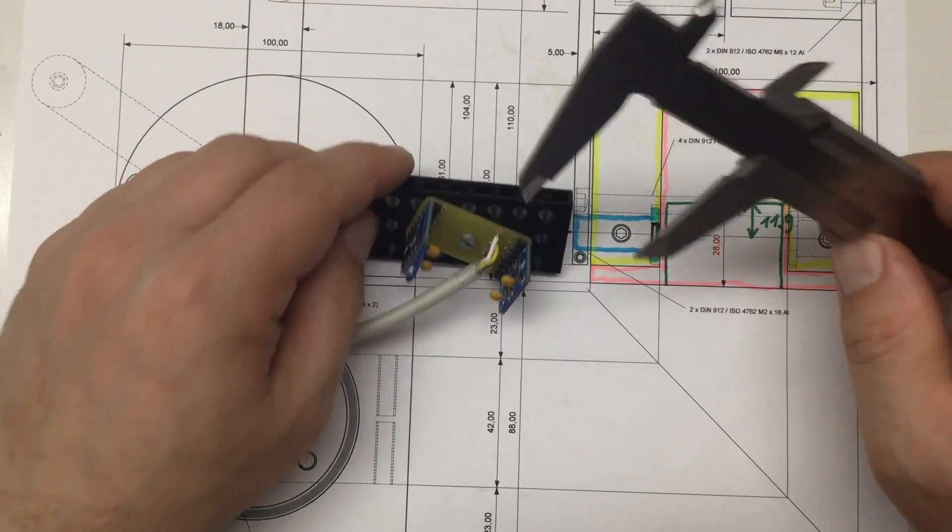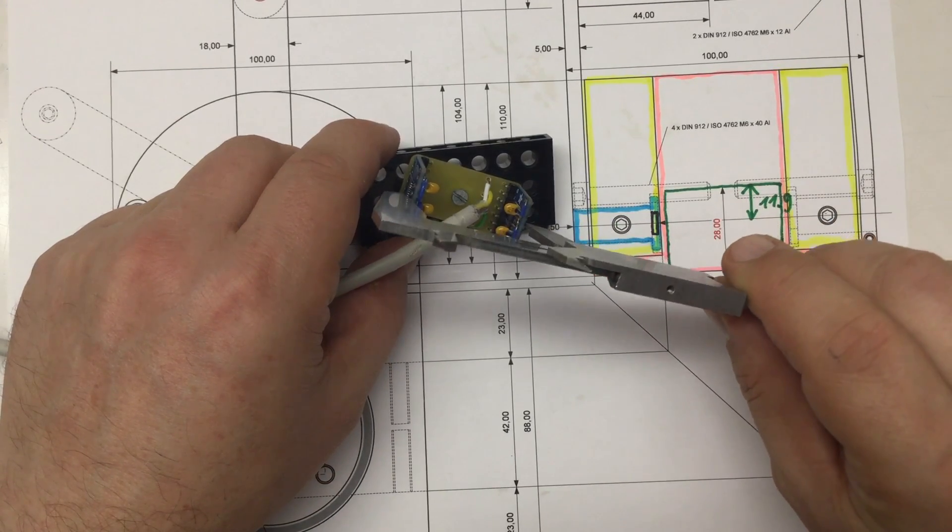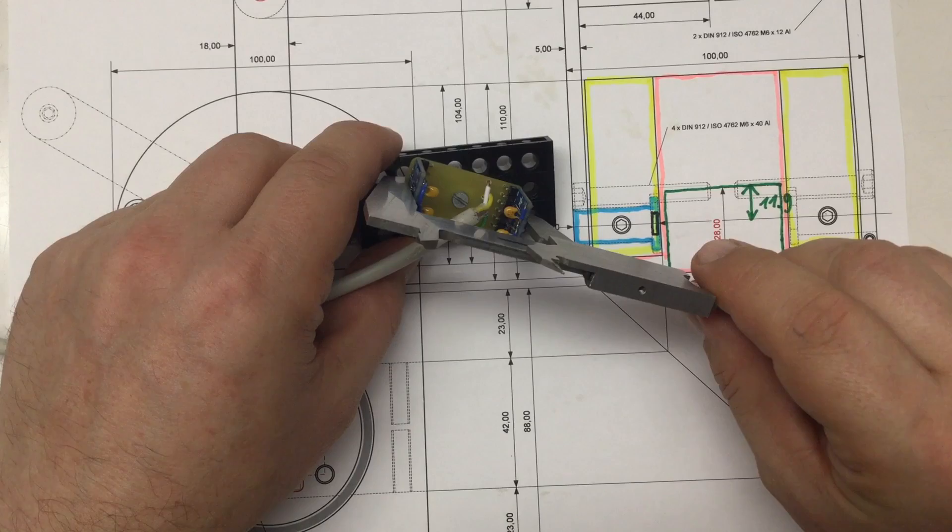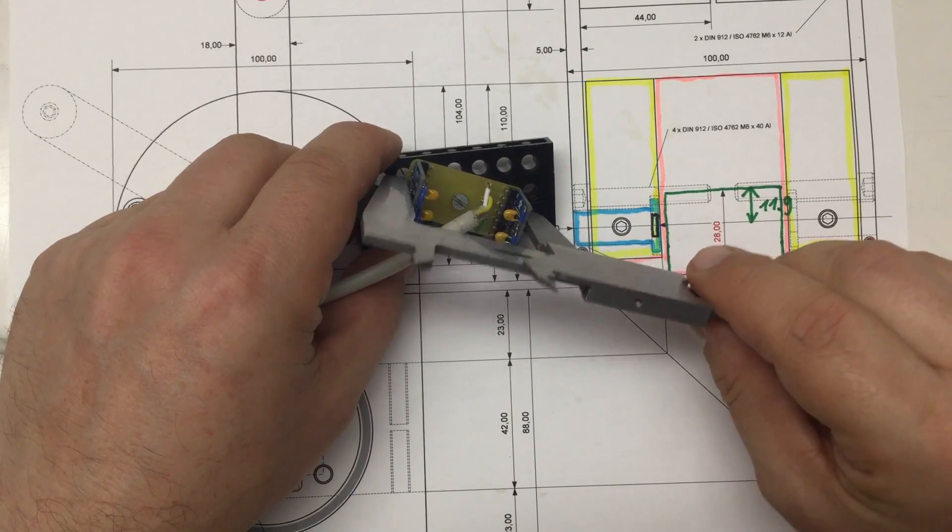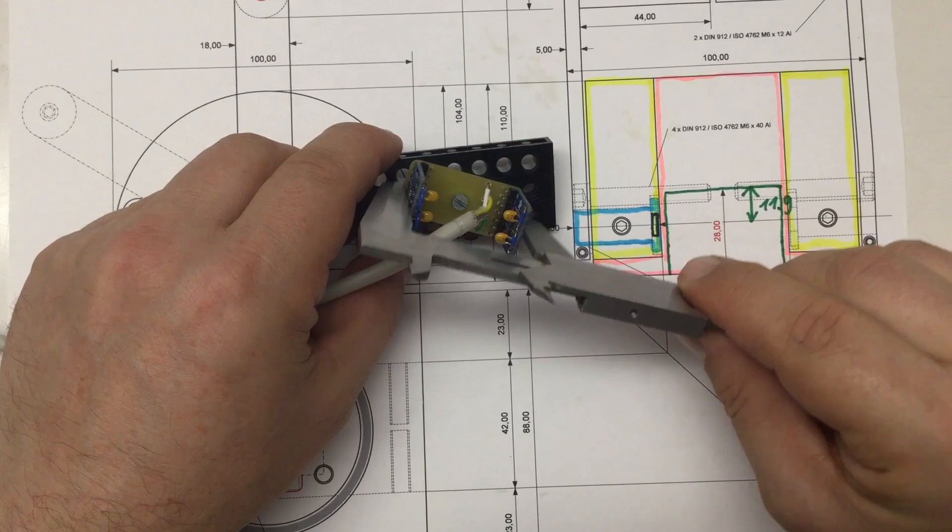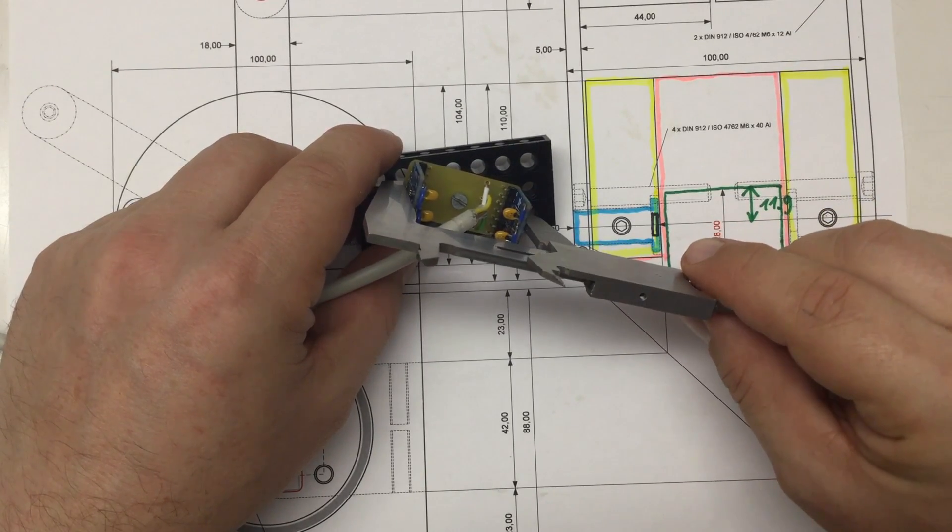Another important but not that critical measurement—I mean it's critical because if I get that wrong it won't fit into the pocket, but you can still file. This is the length of the board and how much the chips are actually elevated up on the breakout boards.